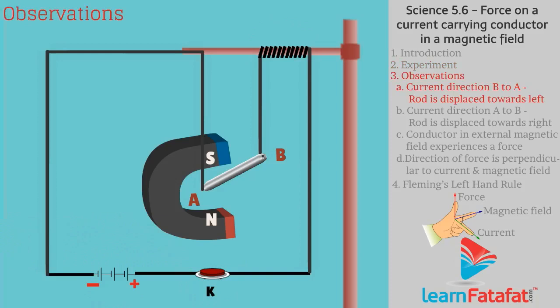Observations. If the direction of current is from B to A, then it is observed that rod is displaced towards left.